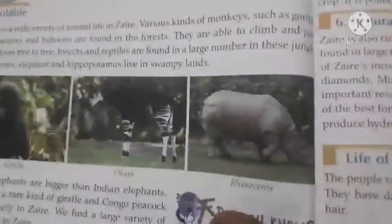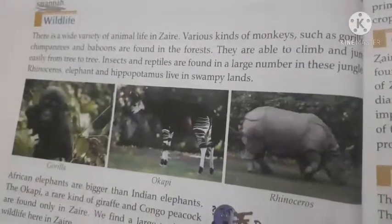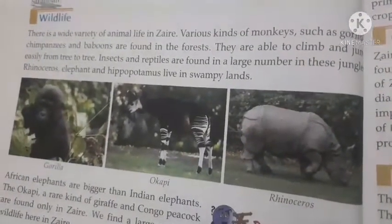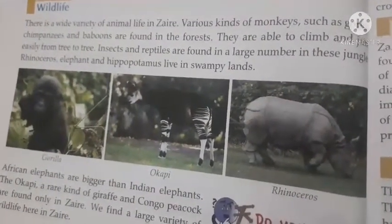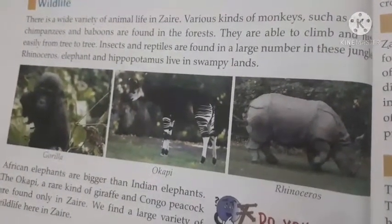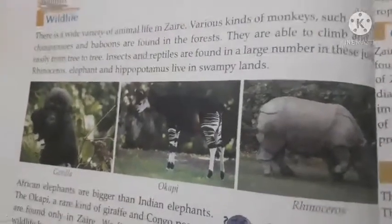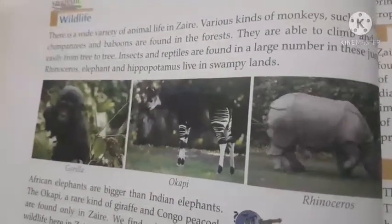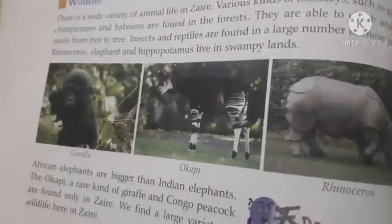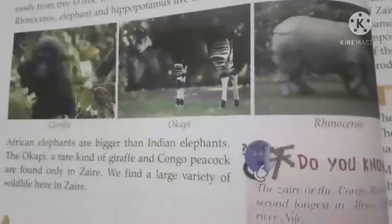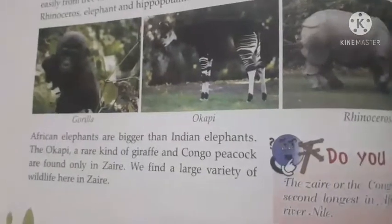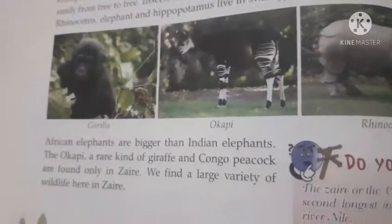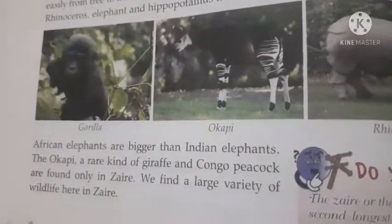Rhinoceroses, elephants, and hippopotamuses live in swampy land. African elephants are bigger than Indian elephants.